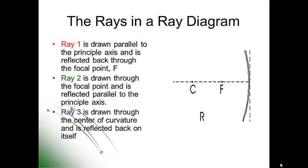Here are your three different rays. Ray one is drawn parallel to the principal axis; when it reflects, based on the law of reflection, it goes through the focal point. Ray two is drawn through the focal point and is reflected parallel to the principal axis. Ray three is drawn through the center of curvature and reflects back on itself. Those three rays will be more clear as we begin to draw our diagrams.